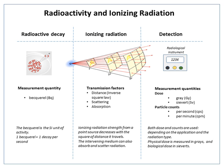The becquerel succeeded the Curie, an older non-SI unit of radioactivity based on the activity of 1 gram of radium-226. The Curie is defined as 3.7 × 10¹⁰ s⁻¹, or 37 GBq. Conversion: 1 Ci = 3.7 × 10¹⁰ Becquerels = 37 GBq.